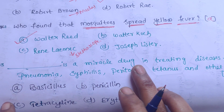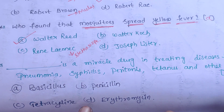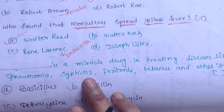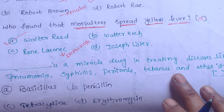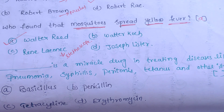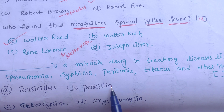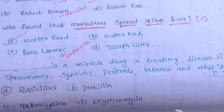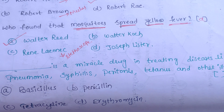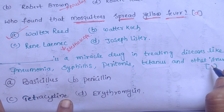The next question: which is a miracle drug in treating diseases like pneumonia, syphilis, peritonitis, tetanus, and other illnesses? Options: A. Bacillus, B. Penicillin, C. Tetracycline, D. Erythromycin. Penicillin is the miracle drug because Alexander Fleming accidentally discovered it, and it cures pneumonia, syphilis, peritonitis, and tetanus. Our correct answer is Option B.